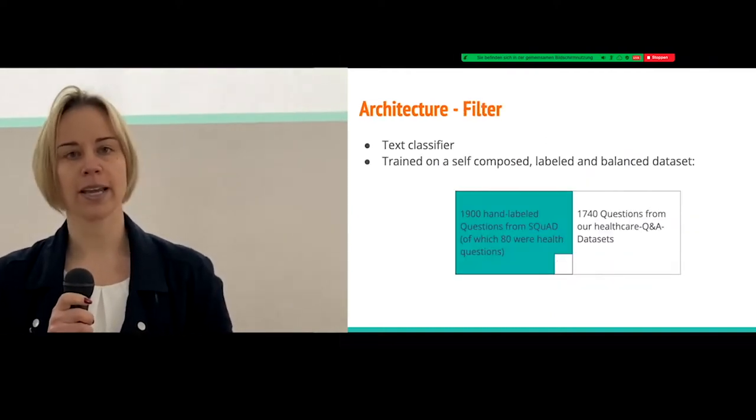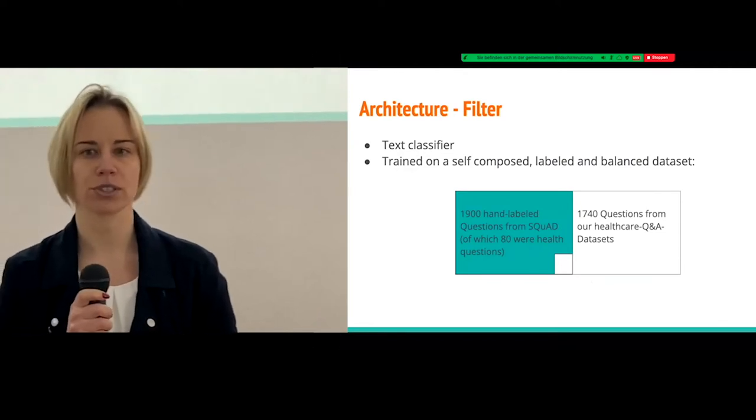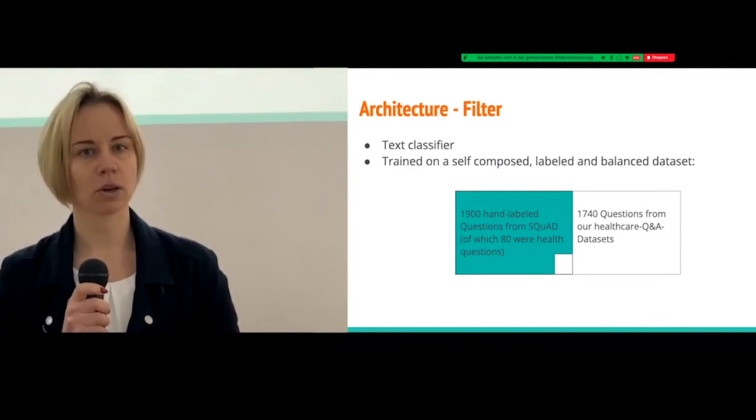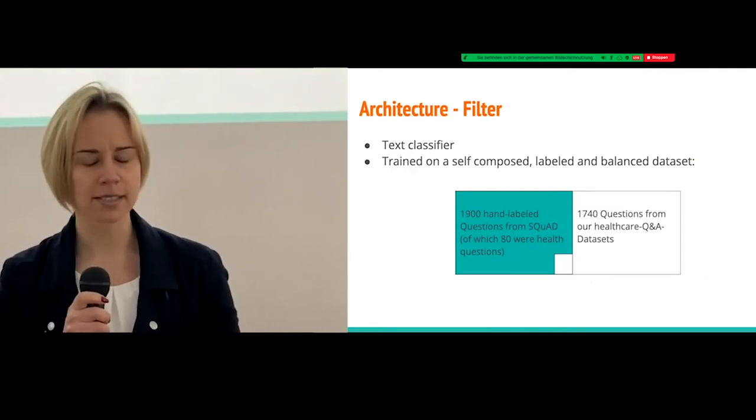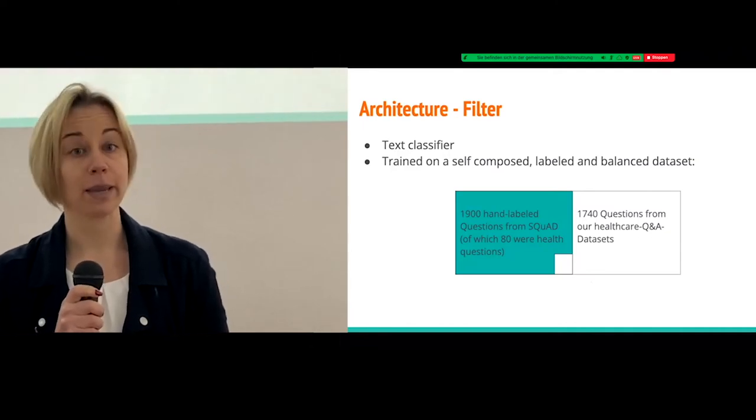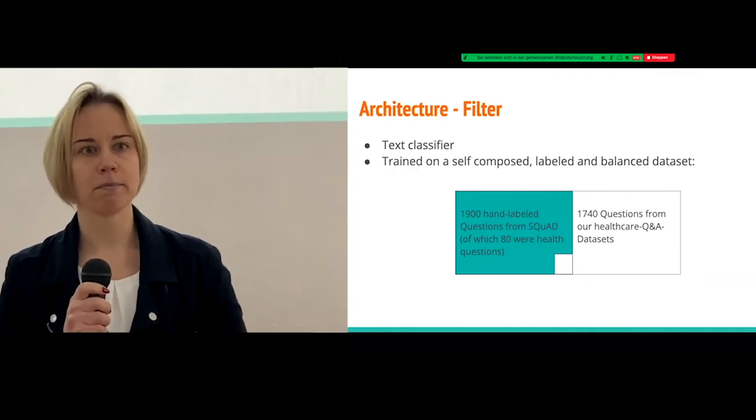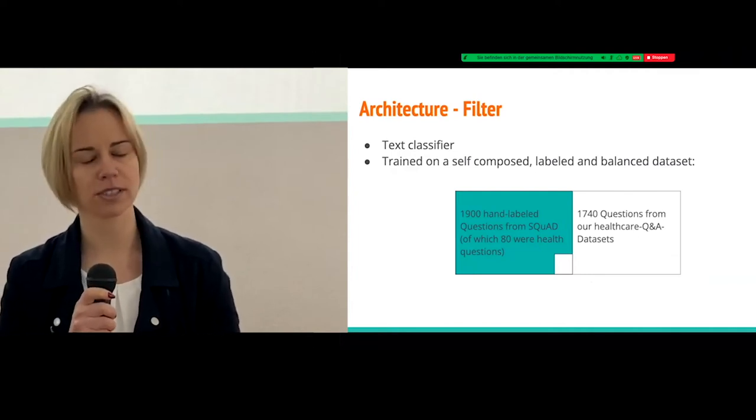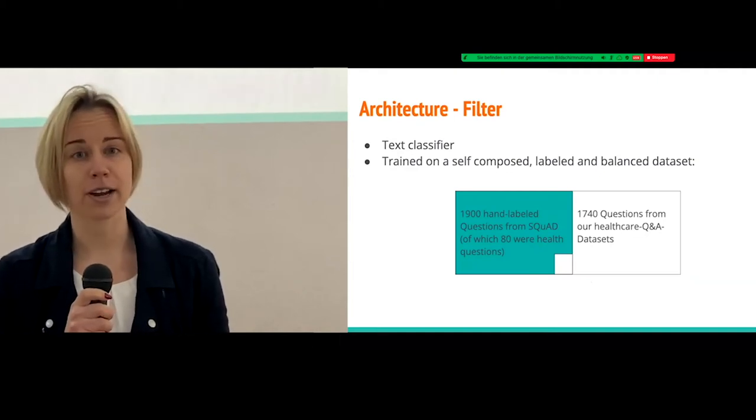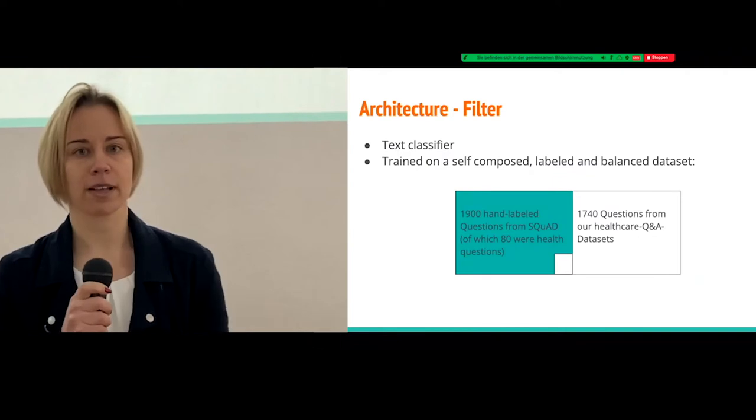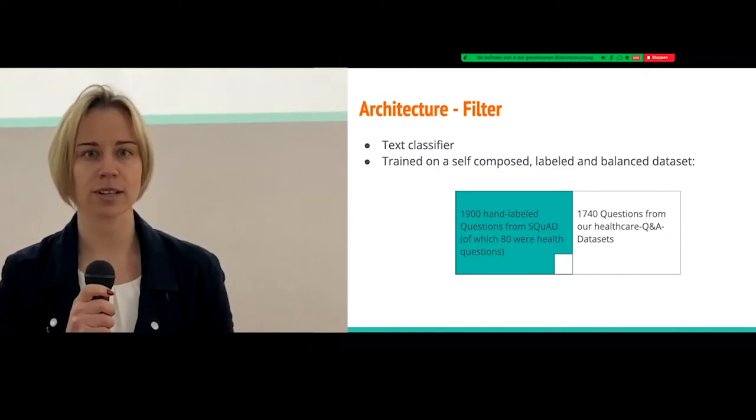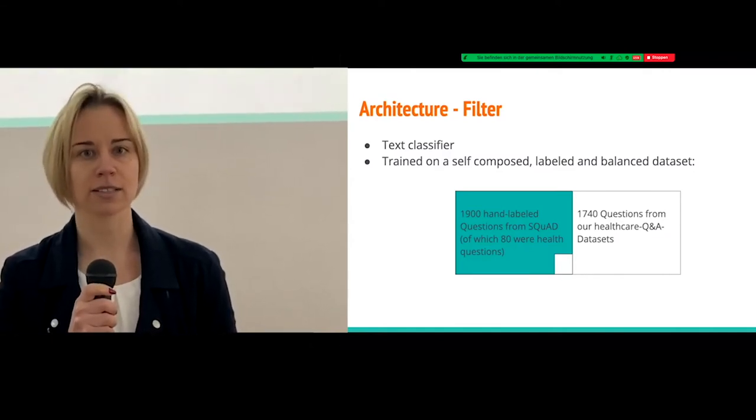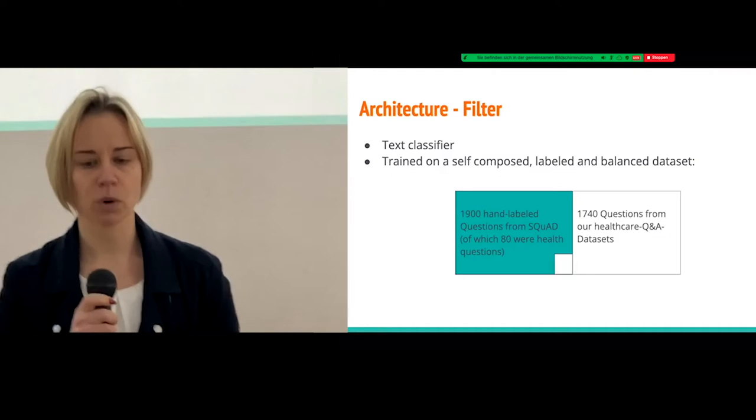So, let me now explain how this classifier, the filter works. We had to build it completely on our own. And because it's a supervised learning task, we needed a labelled data set. We had, on the one hand, many health care questions. That was the easy part, but we needed, on the other hand, diverse questions except health care questions. That didn't exist. So, we took a diverse data set with questions like the Stanford question and answering data set and manually labelled it. And we put together a data set that was well balanced.